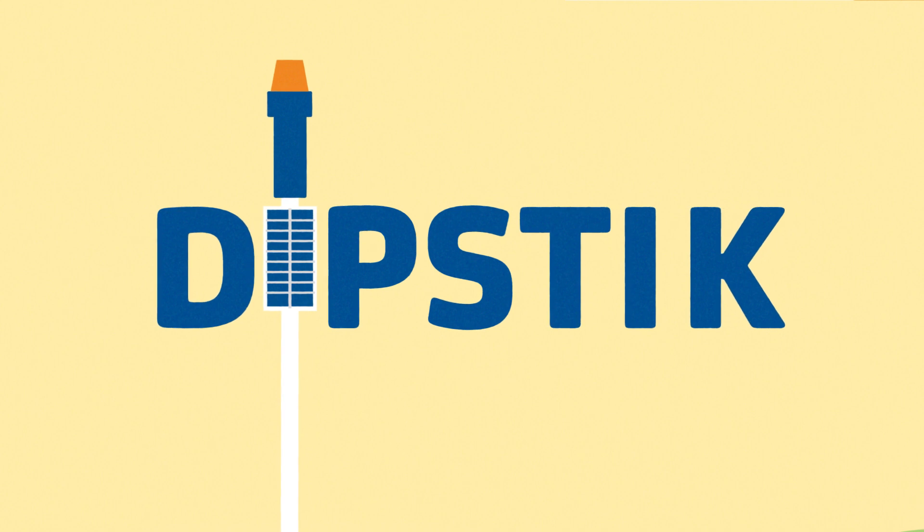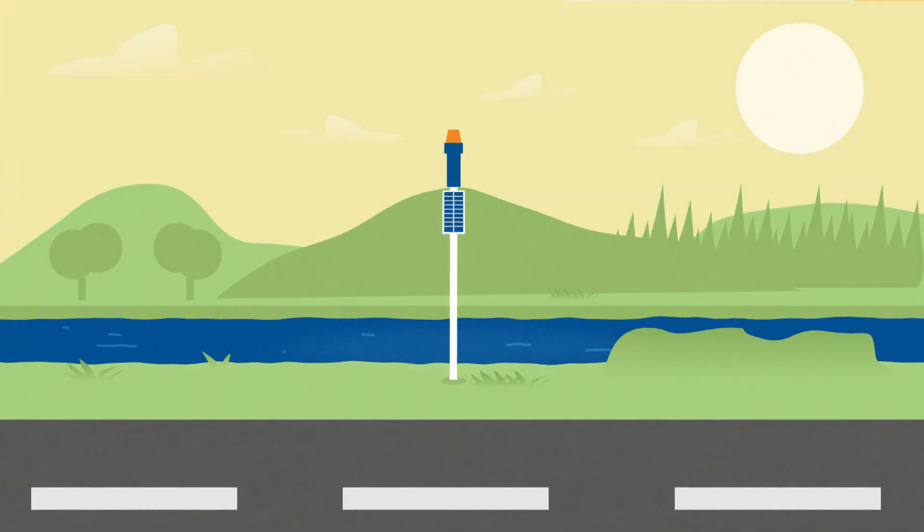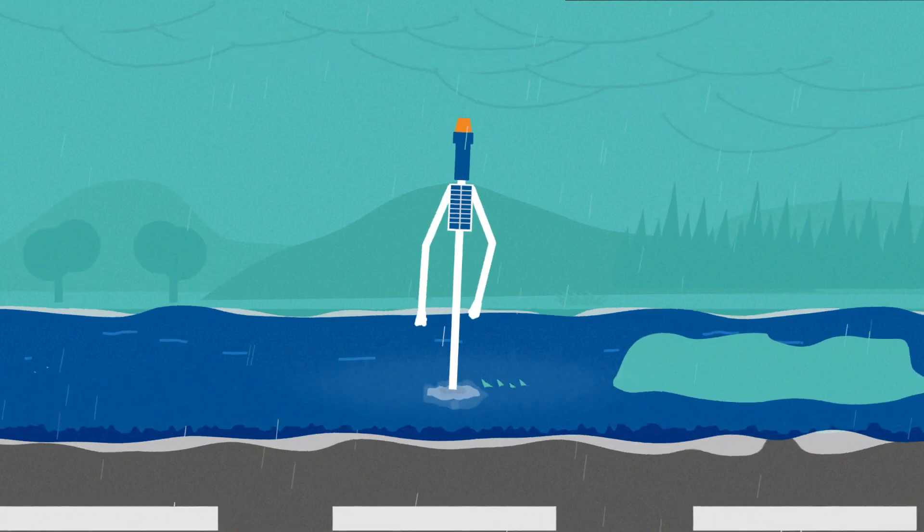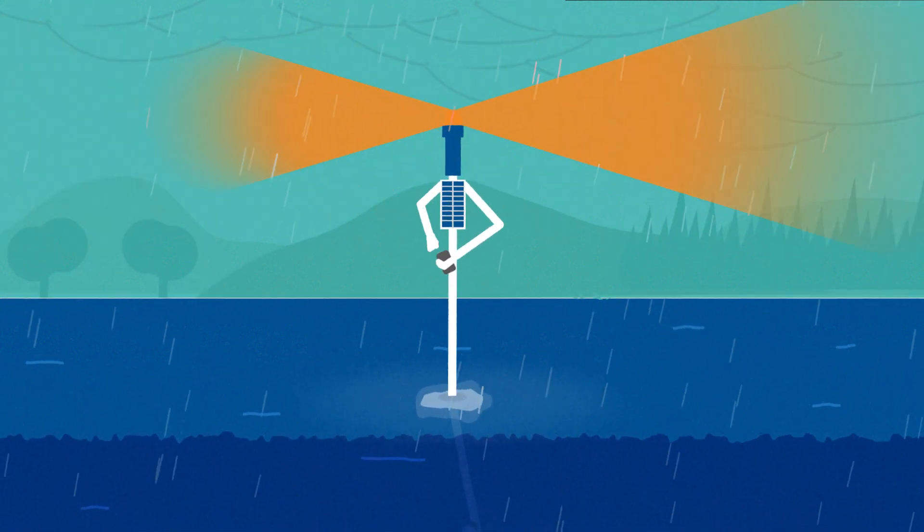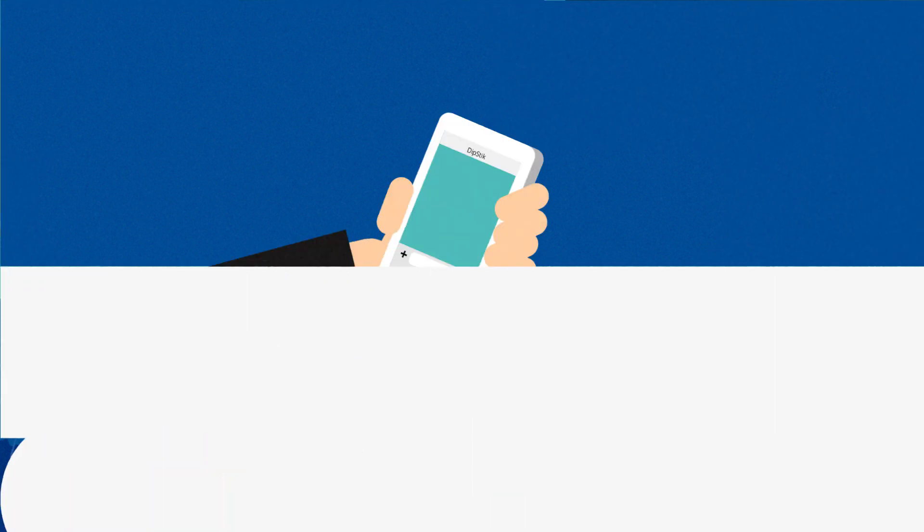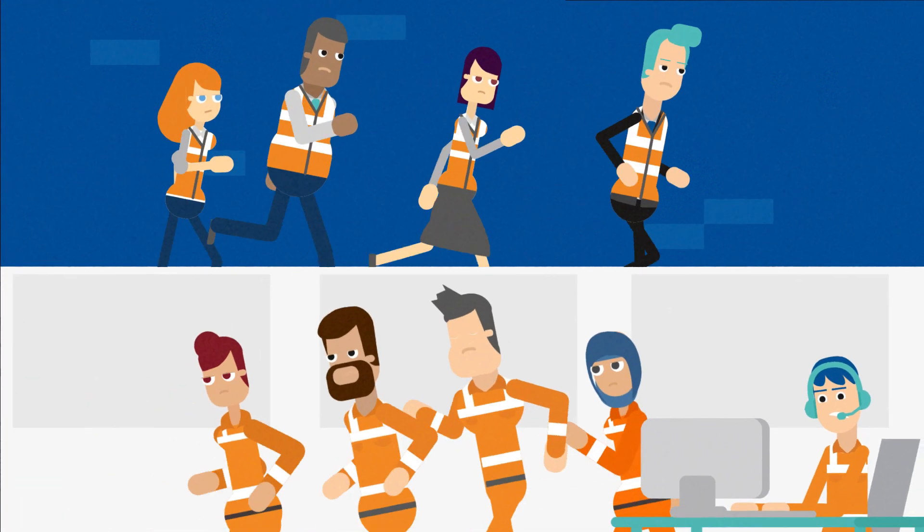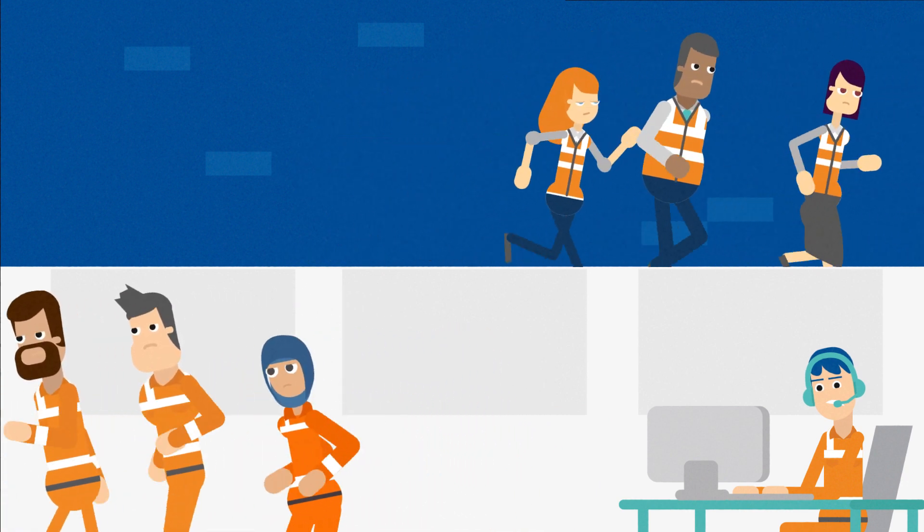Introducing Dipstick. Dipstick's technology continuously monitors water levels in flood-prone areas. As soon as water starts rising, the Dipstick device sends an SMS to the local council and the local NSW SES unit, giving them maximum time to prepare and respond to flood danger.